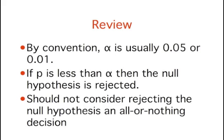By one convention, if the probability value is below 0.05, then the null hypothesis is rejected. Another convention, although slightly less common, is to reject the null hypothesis if the probability value is below 0.01.